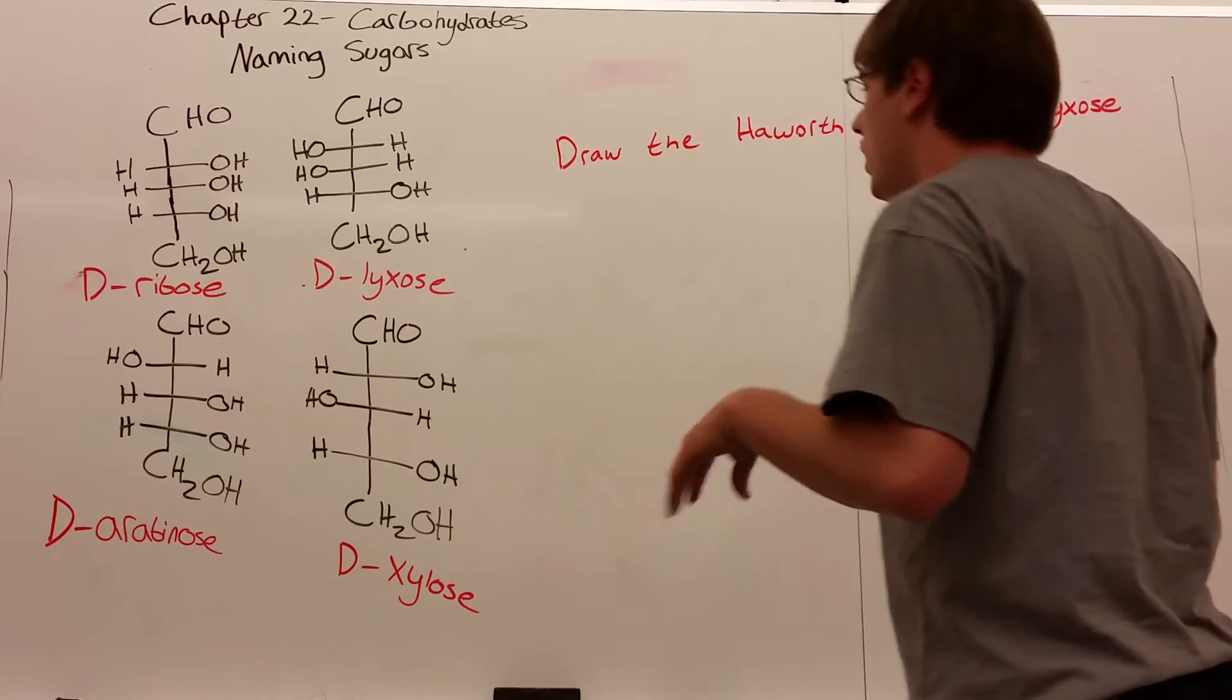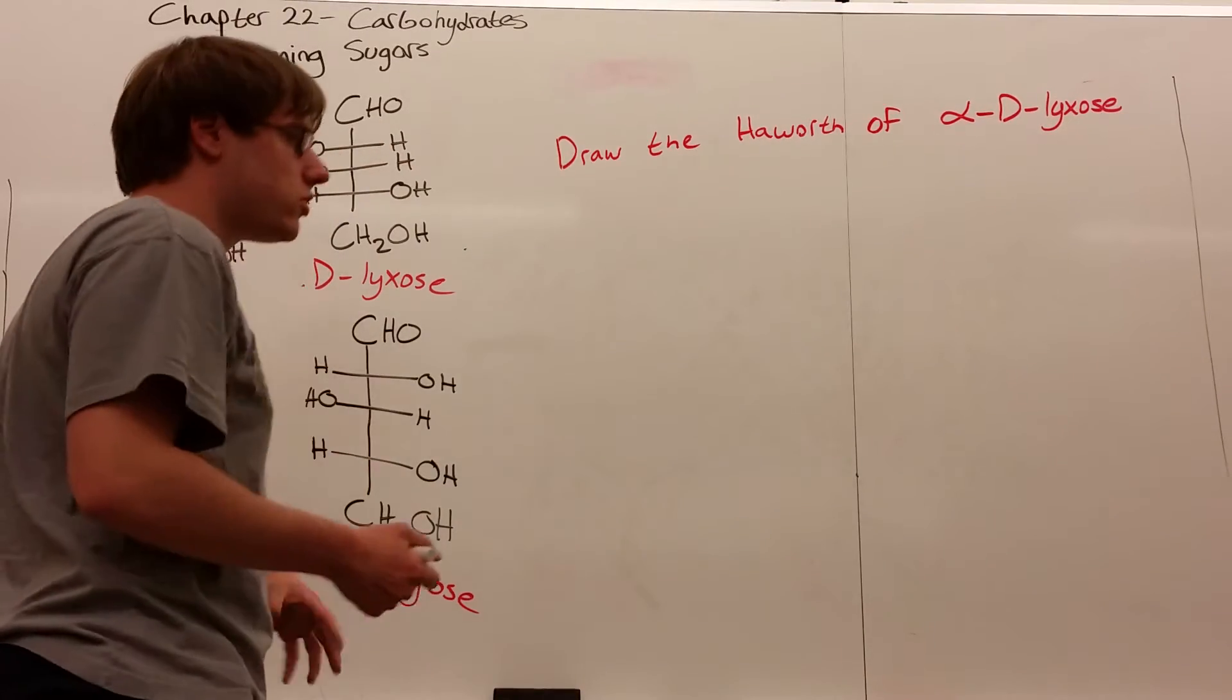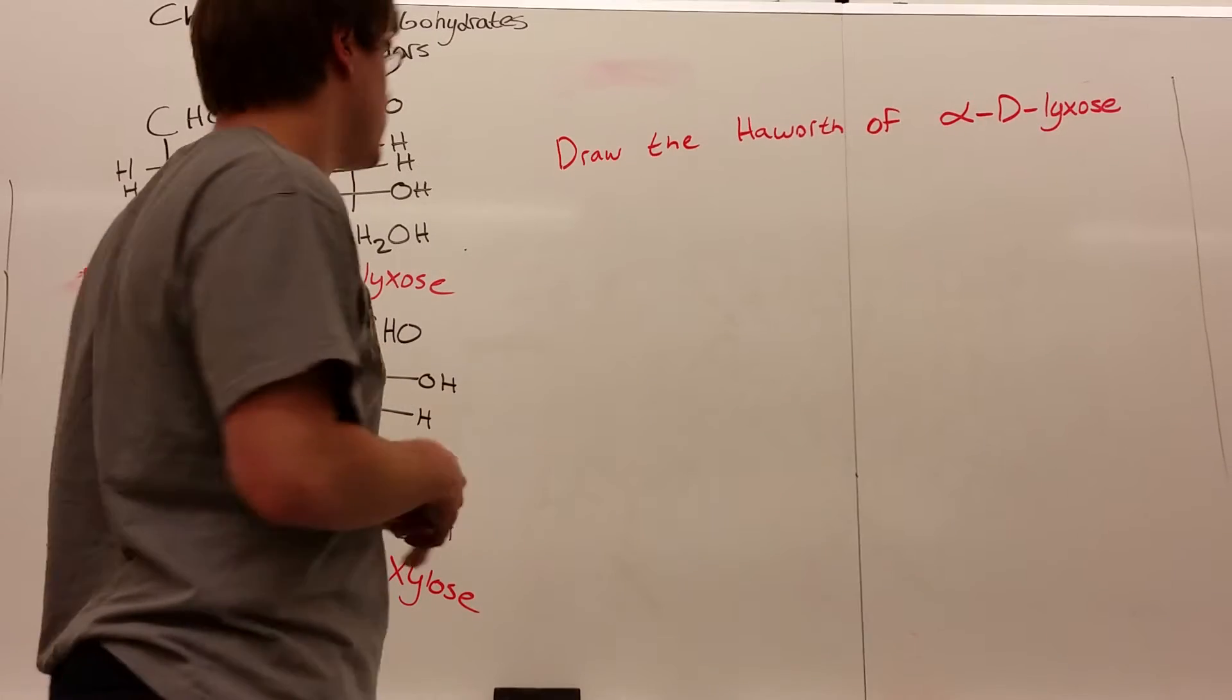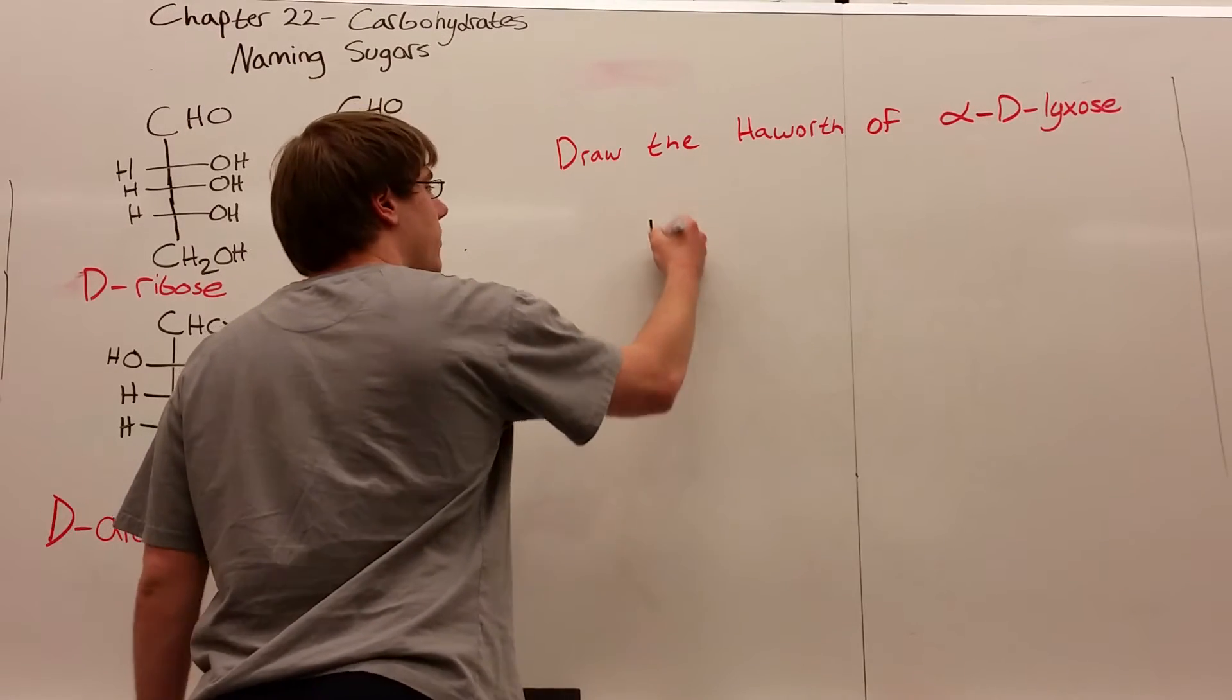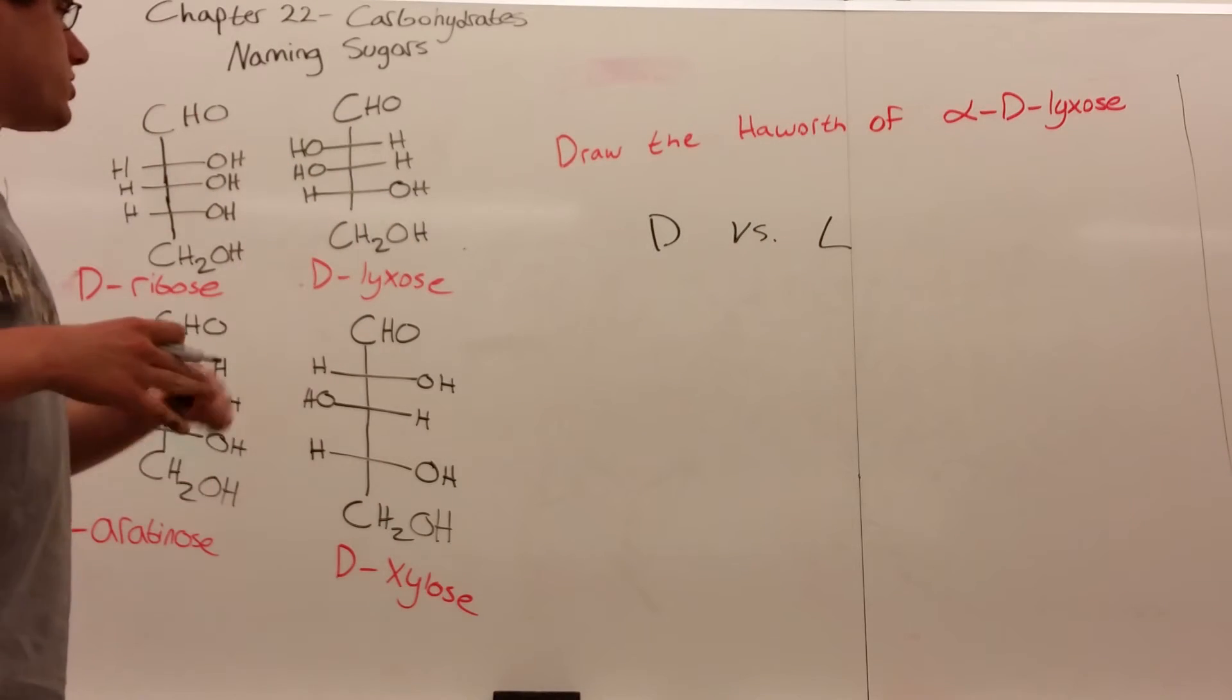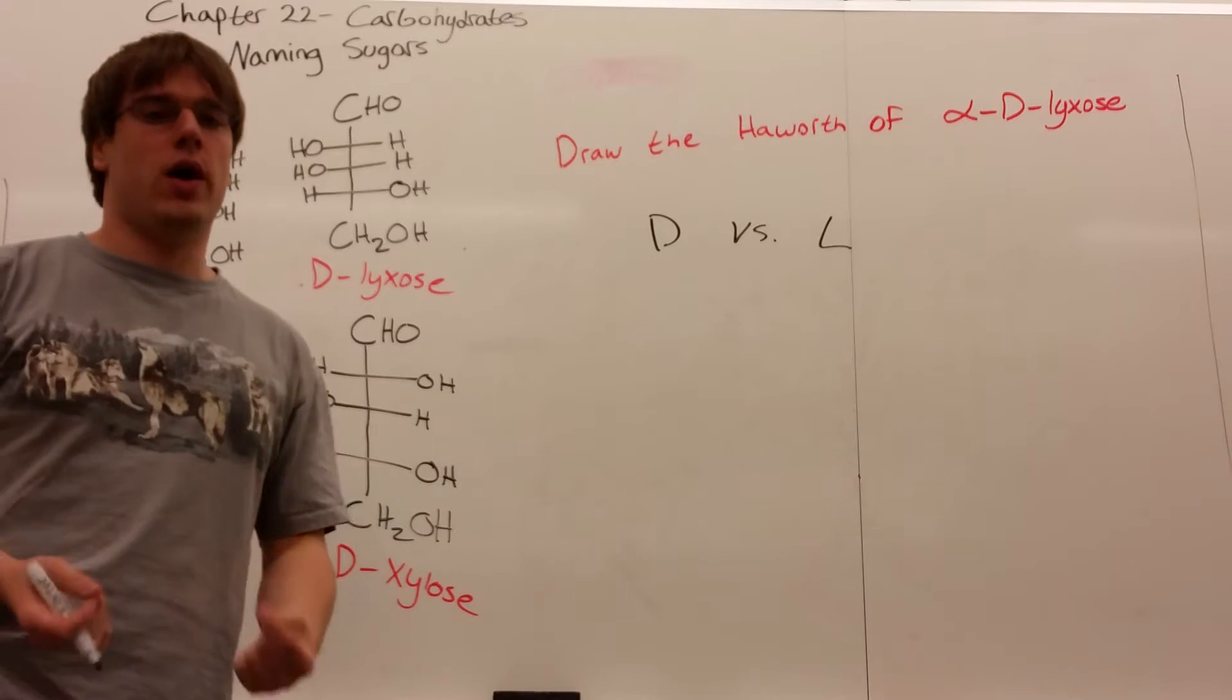Let's start by defining the difference between D and L sugars, and the difference between alpha and beta sugars. First, let's talk about D versus L. When we're talking about D versus L, you're always looking at your penultimate OH.